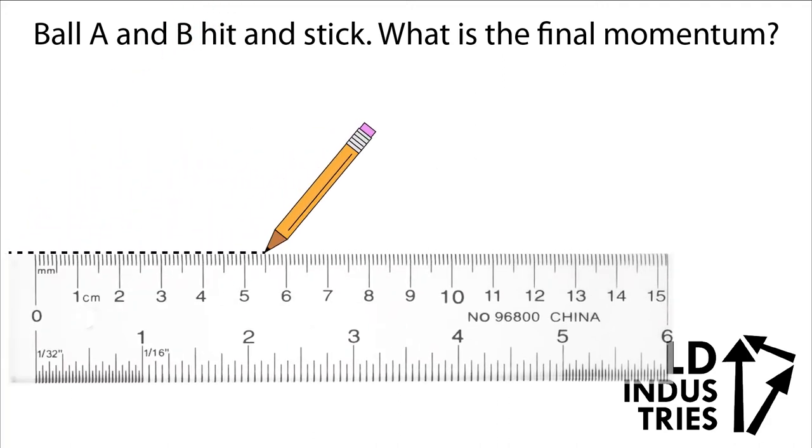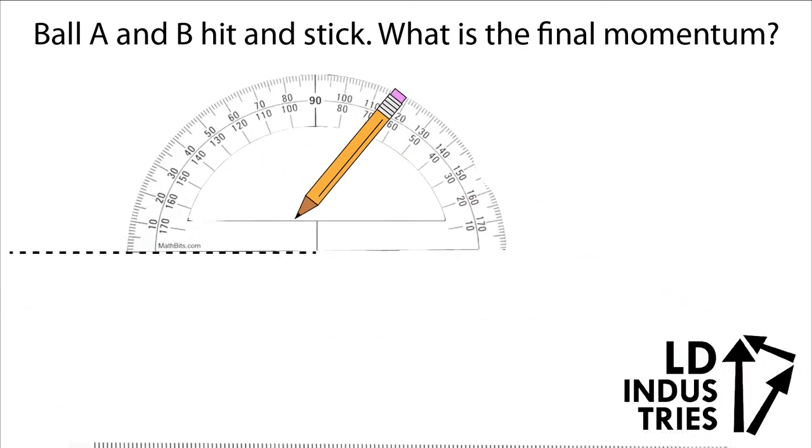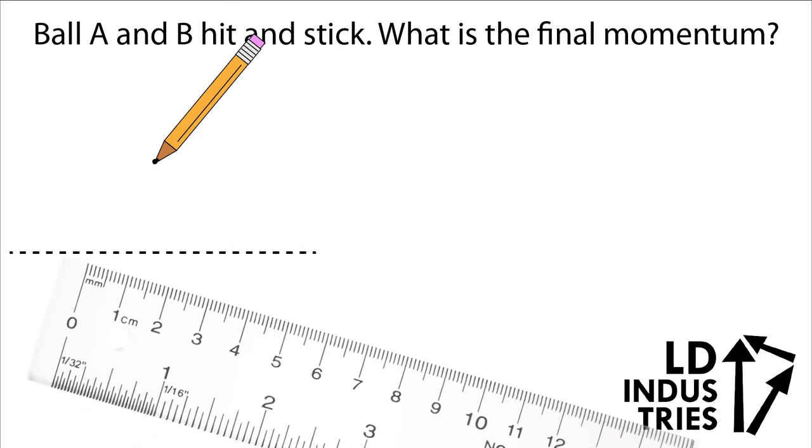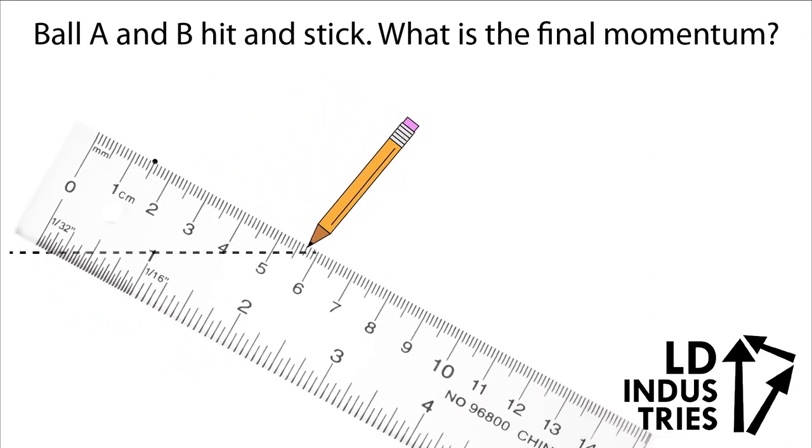I'll start by drawing three centimeters at 30 degrees. I'll make a reference line and measure out 30 degrees just like I saw on the diagram. I'll use my ruler to make it exactly three centimeters.